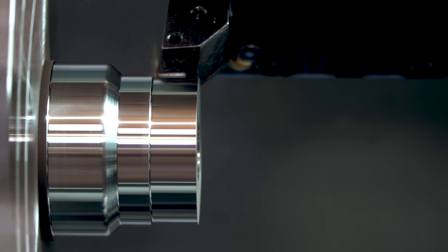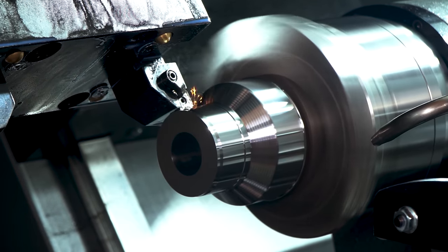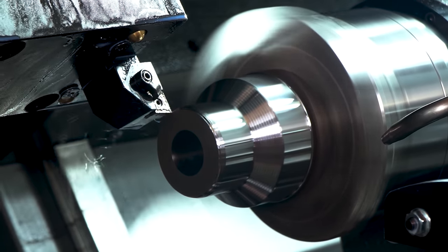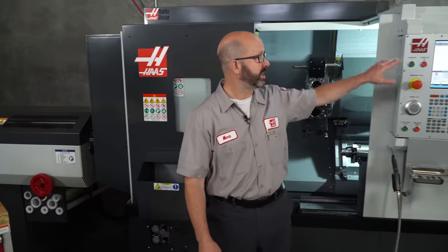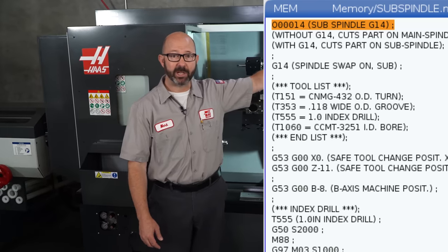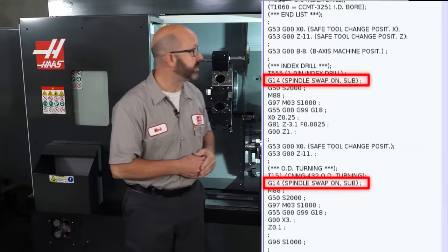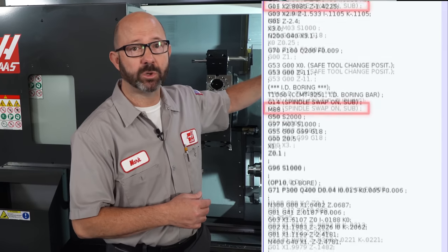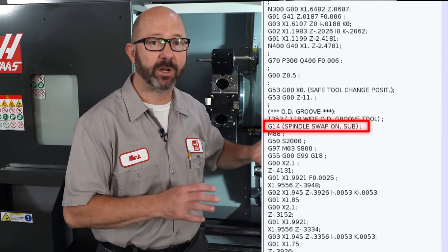If you can program this, you can program this. Now, as far as our code goes, the only difference between those two programs is a single G code, a G14. We can drop a single G14 at the beginning of our program, and that's gonna get the job done. But typically, I like to put one at the beginning of each tool call, in with the rest of our safe startup line information. This is our best practice.